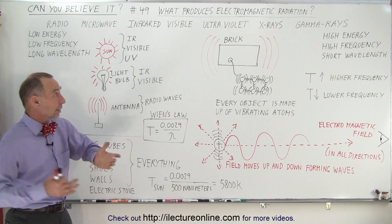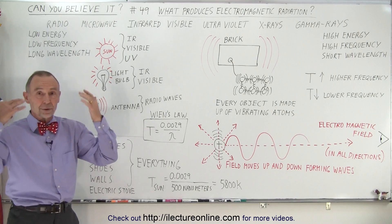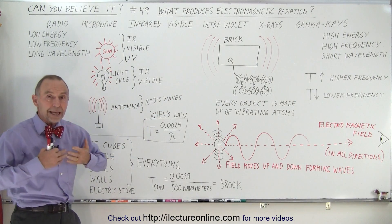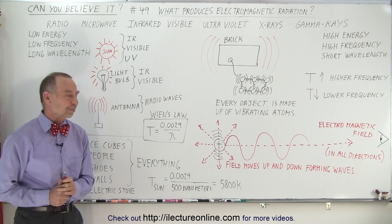So why is it that something like a brick, or your hair, or your shoes, or the walls of the room, or ice cubes, how do they produce electromagnetic radiation?